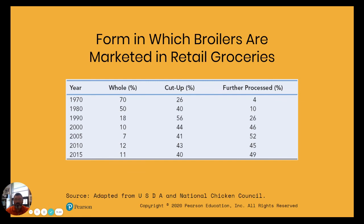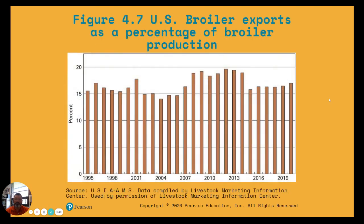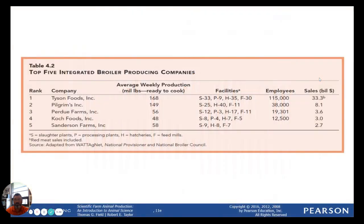Today, only about 11% are sold as whole broilers — that number has dropped dramatically. Most are cut or further processed into smaller things like chicken nuggets. As for broiler exports as a percentage of production, notice that number has been relatively high, maintained basically above 15% since about 1995. It's a huge part of the industry.